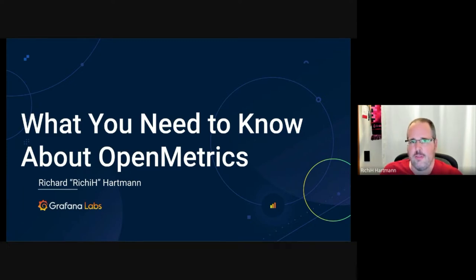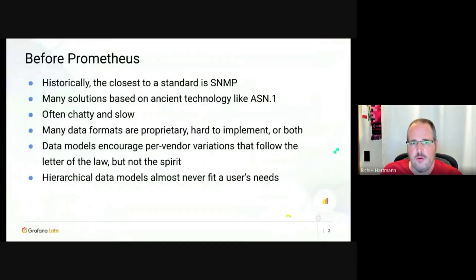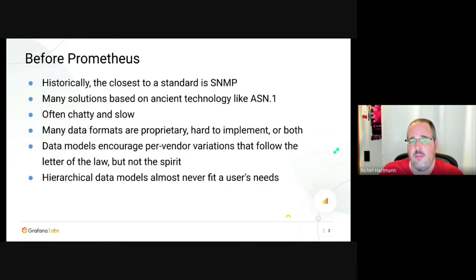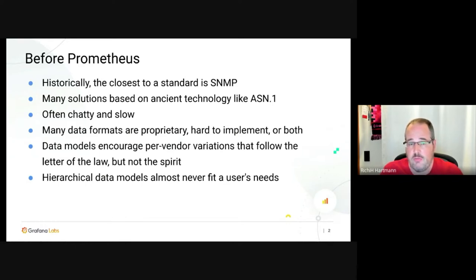Historically, the closest thing we had to a standard for metrics transmission and telemetry transmission was SNMP. Many solutions like SNMP are based on ancient technology — for example, ASN.1. TLS is also based on ASN.1, and while ASN.1 was great in the 70s, as of today it's just a huge pain to implement and a tremendous security liability.